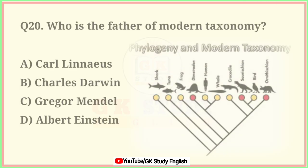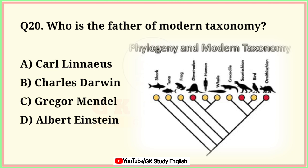Question number 20. Who is the father of modern taxonomy? A. Carl Linnaeus. B. Charles Darwin. C. Gregor Mendel. D. Albert Einstein. Correct answer is option A. Carl Linnaeus.